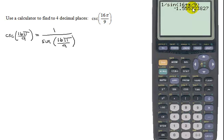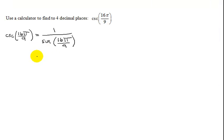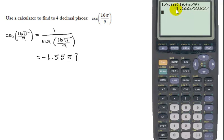So the answer is, if I can get my pen working here, negative 1.5557. Let's double check the calculator again. Is that what it said? Yes, negative 1.5557.